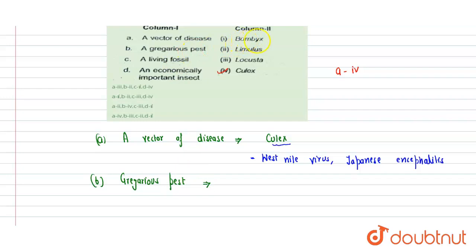A gregarious pest example: Bombyx, no; Limulus, no; Locust, yes. Locust or grasshopper is a gregarious pest which damages the crop to a very large extent because they attack the crop in a bigger group. So for b, the correct match is third.